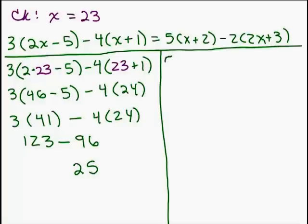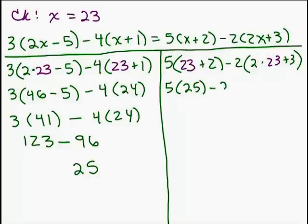Right-hand side. We're going to put in 23 for x. So we begin exactly the same way, just putting in 23 in place of x. And we're going to simplify within each parentheses first. So the first one, 23 plus 2 is just 25. And the second one, we have to do 2 times 23, which is 46, and plus 3.